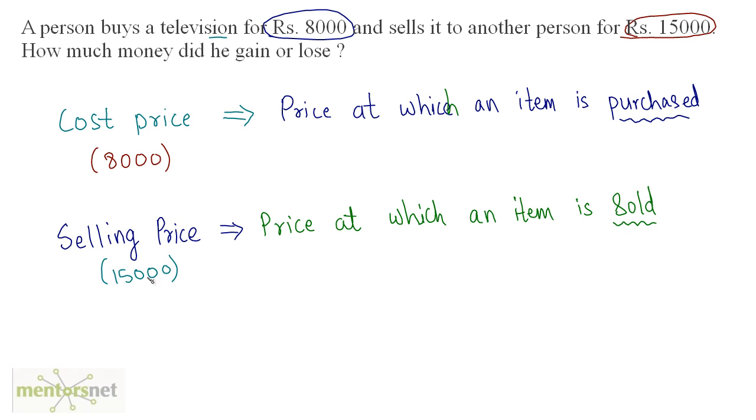This person sold the television at a price which is greater than the price at which he bought it for. Therefore this person earned something. Here selling price is greater than the cost price, which means that the person or the seller has got profit.